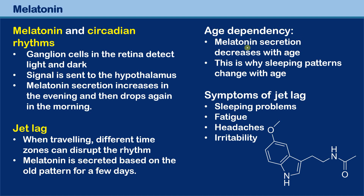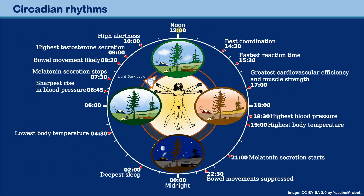Melatonin also influences factors beyond sleep. A circadian rhythm diagram shows that best coordination occurs around 2:30 PM, with fastest reaction time, greatest cardiovascular efficiency, highest blood pressure, and highest body temperature — these are average values. Melatonin secretion starts at around 9 PM, bowel movement is suppressed during this time, and deepest sleep occurs around 2 AM.